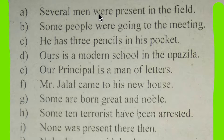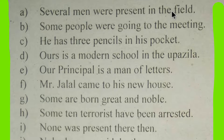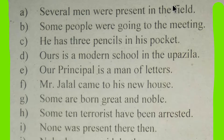'Were' is a linking verb and 'present' is an adjective. 'In' is a preposition — it is making a relationship between 'present' and 'field,' that is, between an adjective and a noun. 'Field' is a noun because it comes after the preposition 'in.' We have to remember that after a preposition we use a noun. 'The' is an article, and an article can act as an adjective.